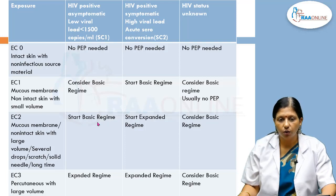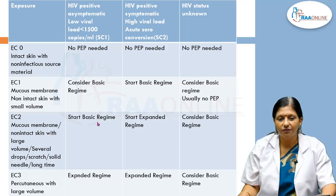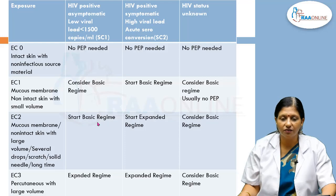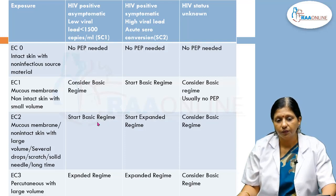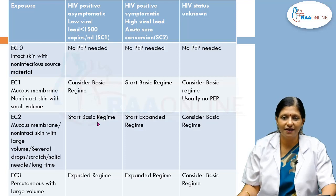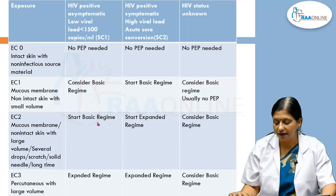For exposure grade 2, where blood contacts mucous membrane or skin with a large volume, a scratch, a solid needle, or prolonged contact, start the basic regimen if the source has a low viral load and the expanded regimen for a higher viral load. For percutaneous large-volume exposure, give the expanded regimen regardless of whether viral load is low or high.